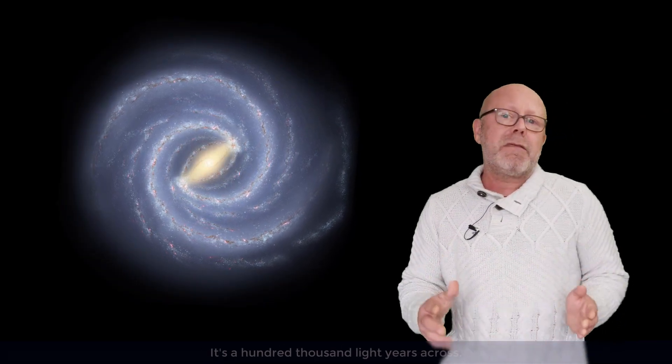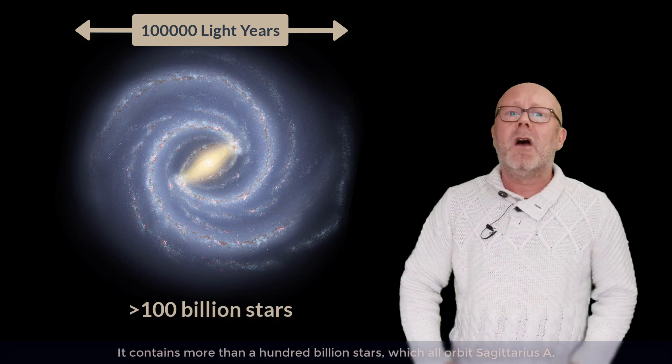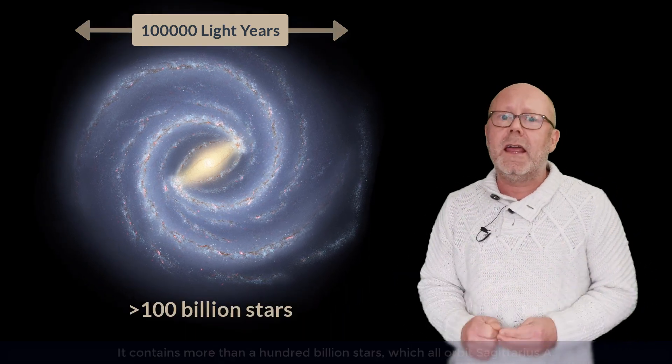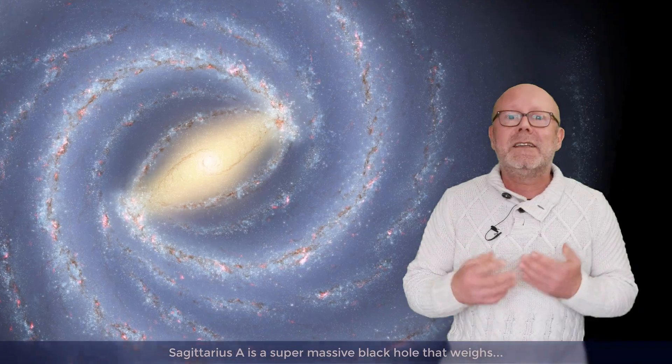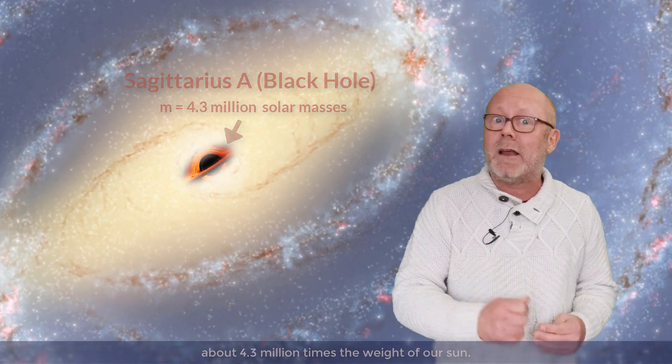For example, the Milky Way, our own galaxy. It's 100,000 light-years across. It contains more than 100 billion stars, which all orbit Sagittarius A. Sagittarius A is a supermassive black hole that weighs about 4.3 million times the weight of our Sun.